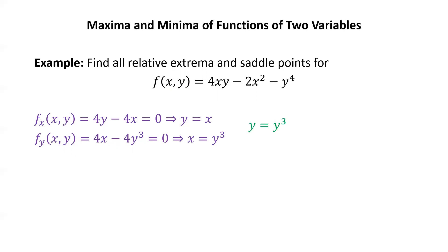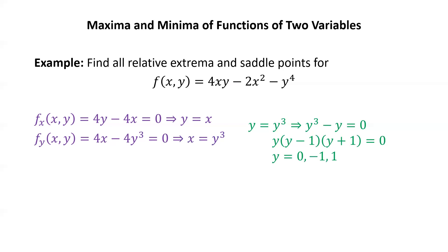Since y equals x from the first equation, we replace x by y in the second equation to get y equals y cubed. Bringing everything to one side, we have y cubed minus y equals zero. The left-hand side factors as y(y − 1)(y + 1), giving three solutions: y equals 0, y equals −1, and y equals 1. Since y equals x, this leads to the three critical points: (0,0), (1,1), and (−1,−1).